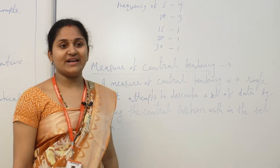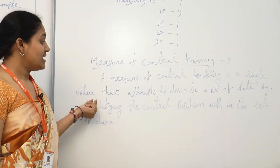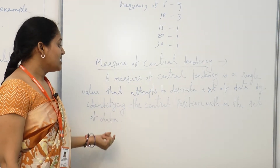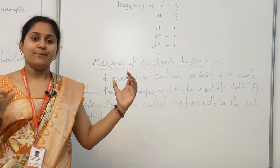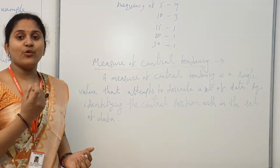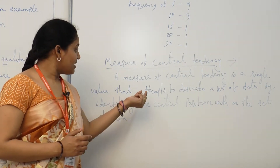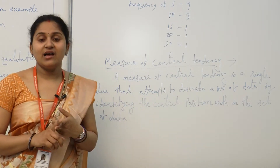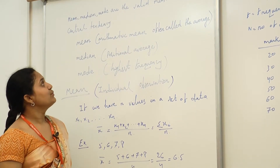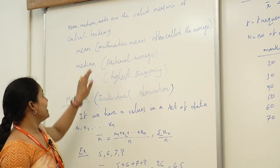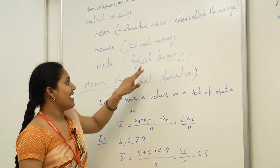Now, what do we mean by measure of central tendency? A measure of central tendency is a single value that attempts to describe a set of data by identifying the central position within the set of data. Mean, median, and mode are valid measures of central tendency. Mean is the arithmetic mean — often called the average. Median is the positional average and mode is the value with the highest frequency.